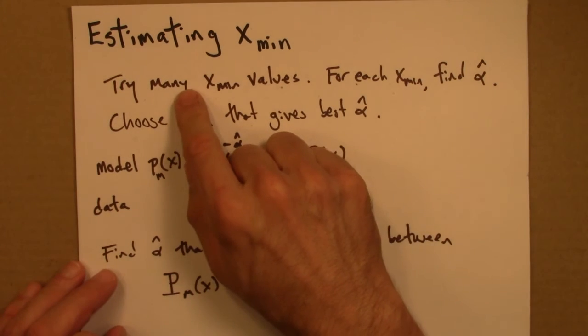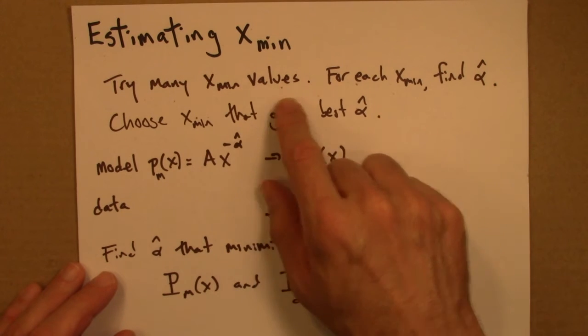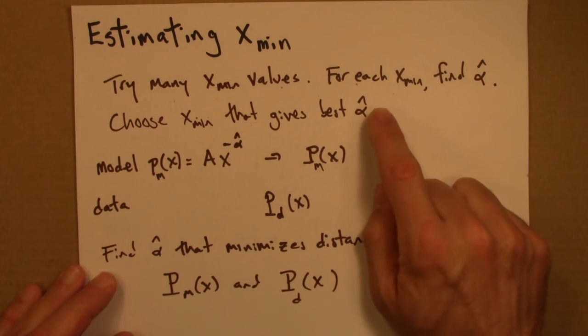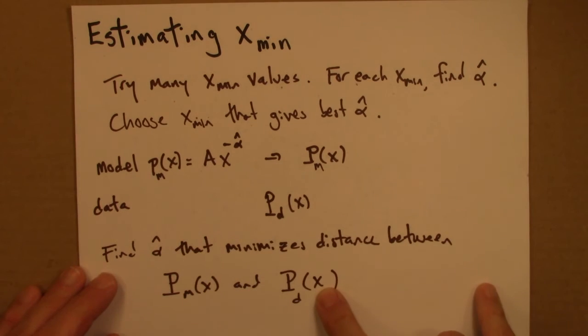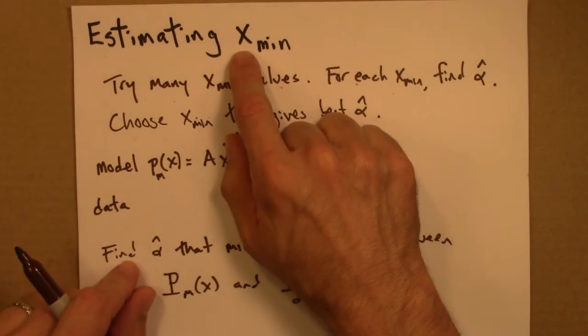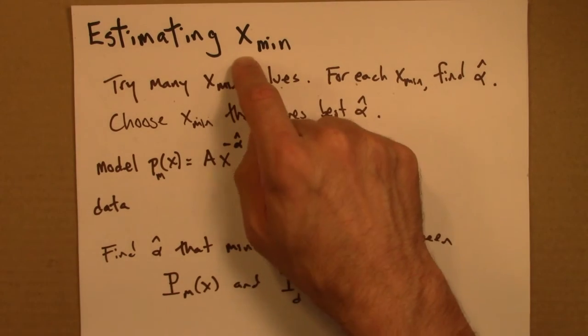And that's what we would use to figure out the best fit. So again, we systematically try xmin values. We choose the one that leads to the best alpha. The best alpha is the one that leads to a model that's closest to the data. So that's a systematic procedure for estimating xmin.